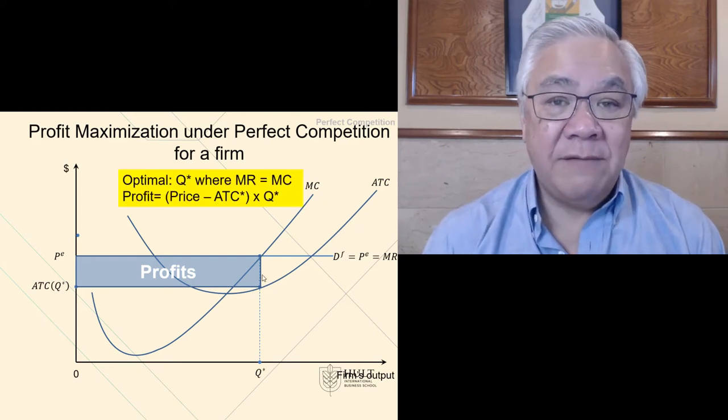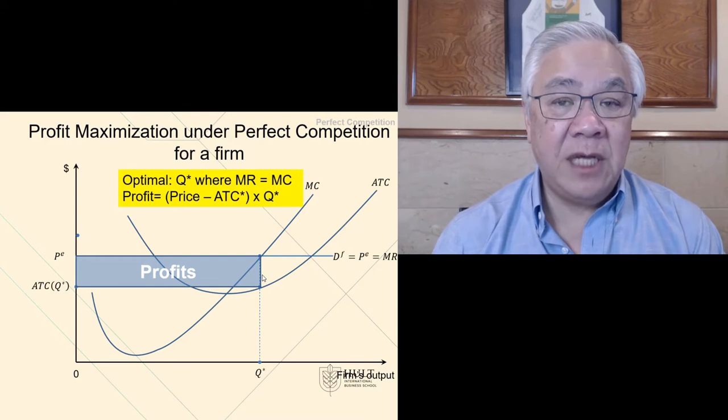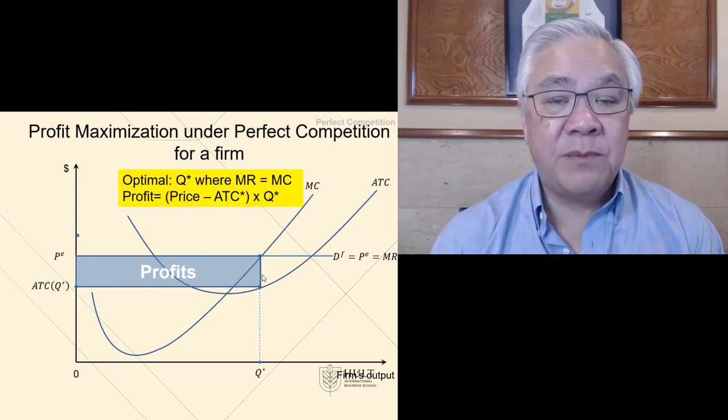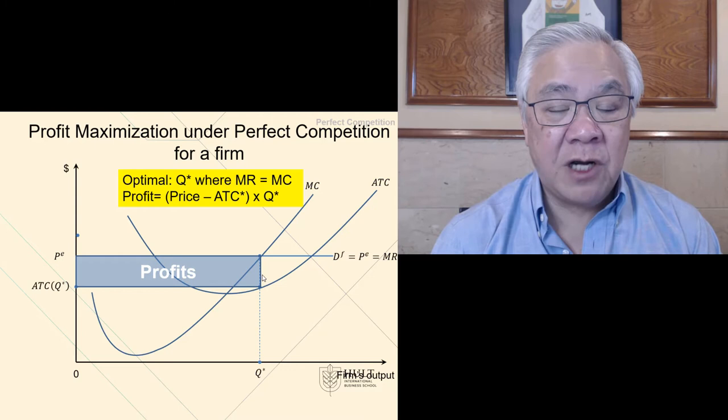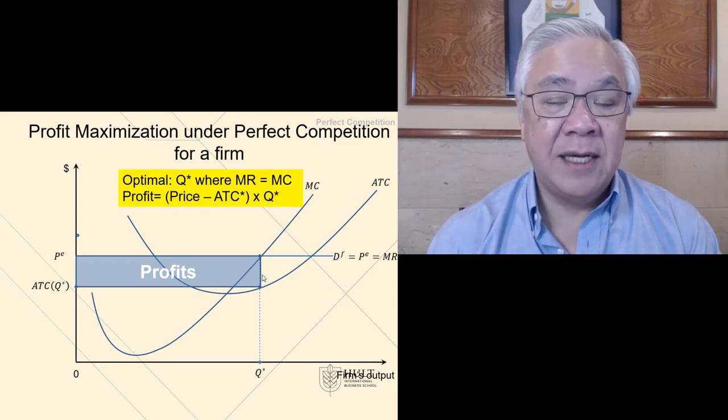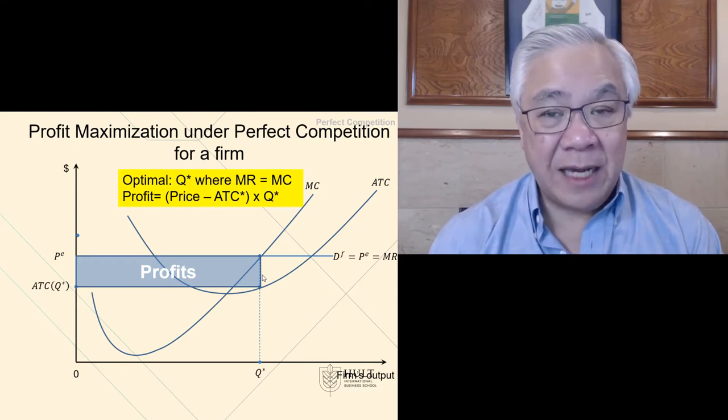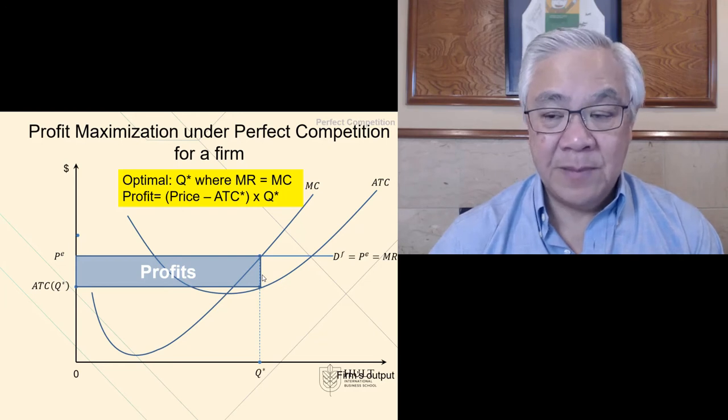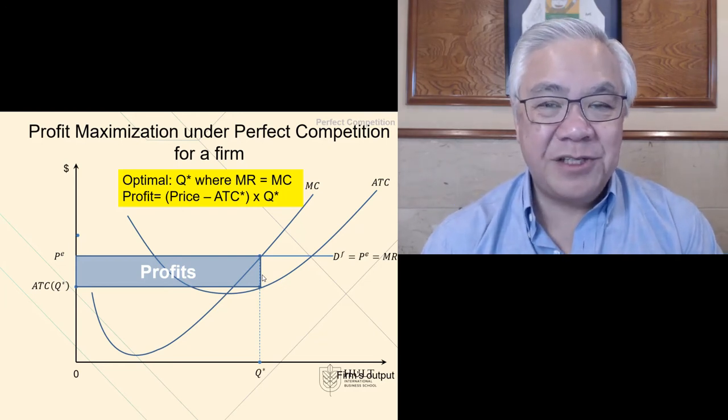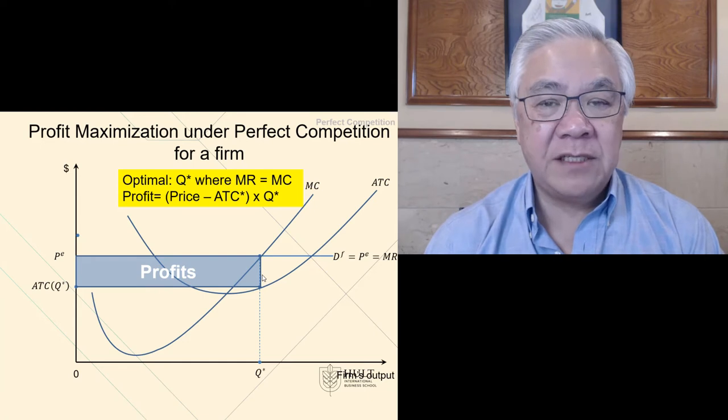So the optimal quantity for a firm is where marginal revenue equals marginal costs and profit equals the price minus the average total cost at equilibrium quantities times the quantity also at equilibrium. So that's the profit. So we've seen this in graphical form. I hope it makes sense to you just looking at how the curves interact. Let's do some with numbers.